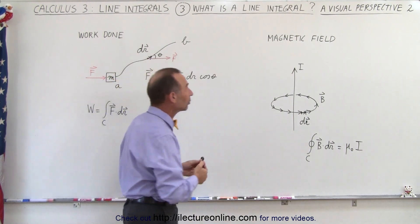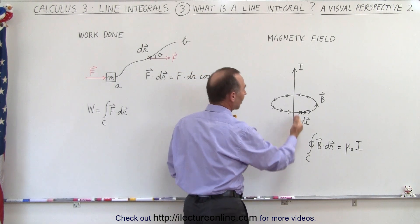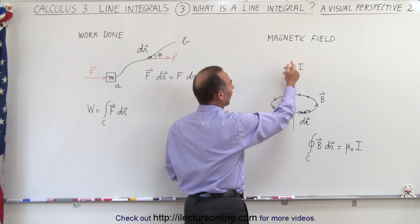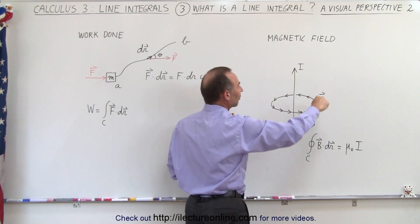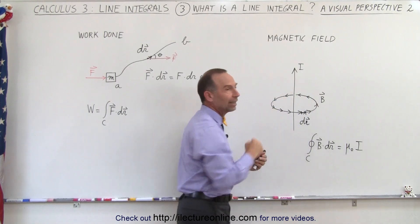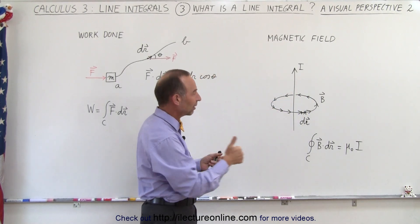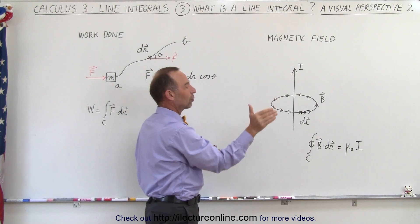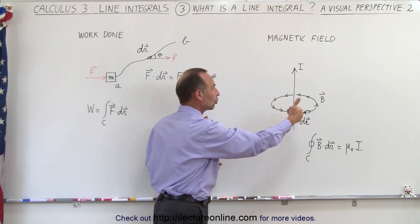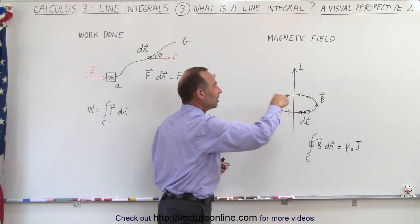Another place where we can use line integrals: let's say we have a wire with a current. Because of that, there will be a magnetic field going around the wire. You can find the direction of the magnetic field by putting your thumb in the direction of the current—your fingers will curl in the direction of the magnetic field.